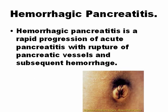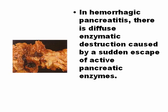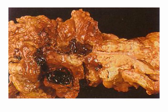Hemorrhagic pancreatitis is acute pancreatitis with rapid progression. The etiology is the same — the pancreatic enzymes activate and digest the tissue of the person. There is a hematoma around the umbilical area, which is typical for hemorrhagic pancreatitis. In hemorrhagic pancreatitis, the diffuse enzymatic destruction is caused by a sudden escape of pancreatic enzymes into the surrounding tissue. This is a picture of a hemorrhagic pancreatitis where the pancreas is totally destroyed.